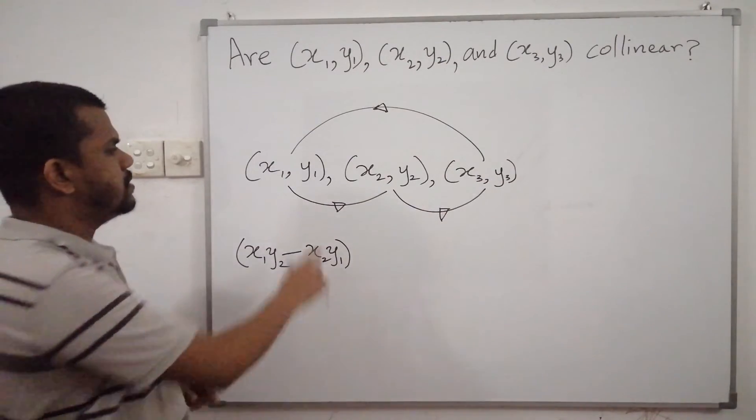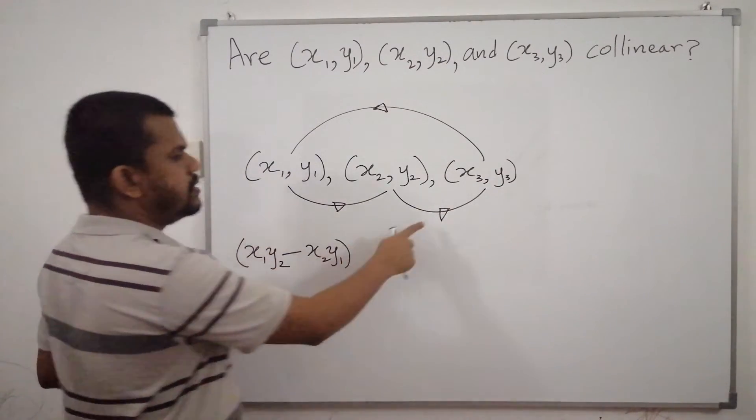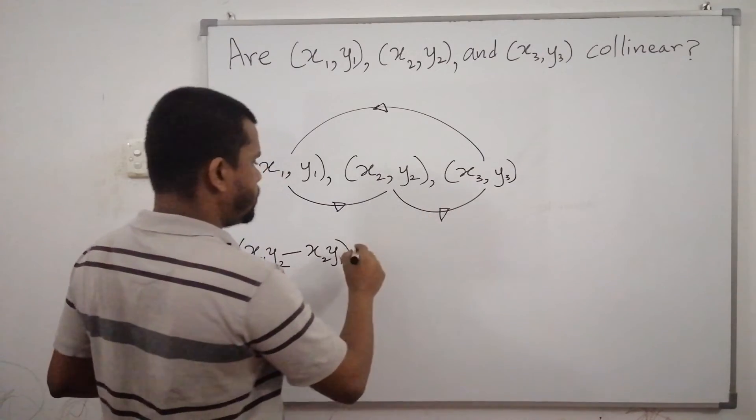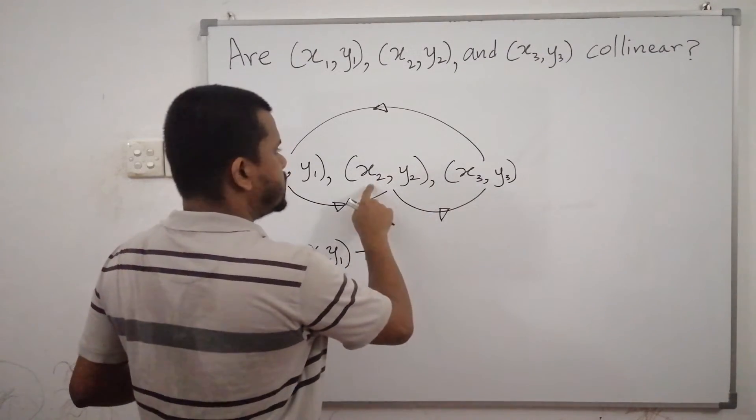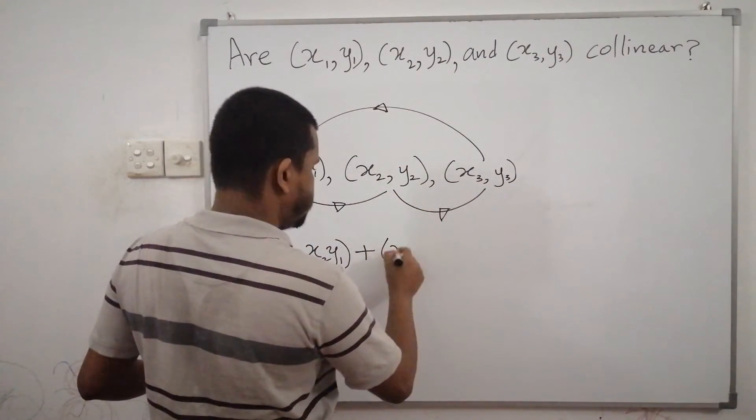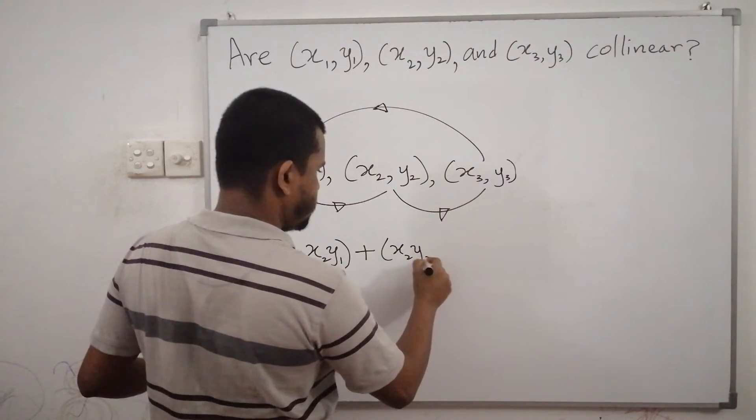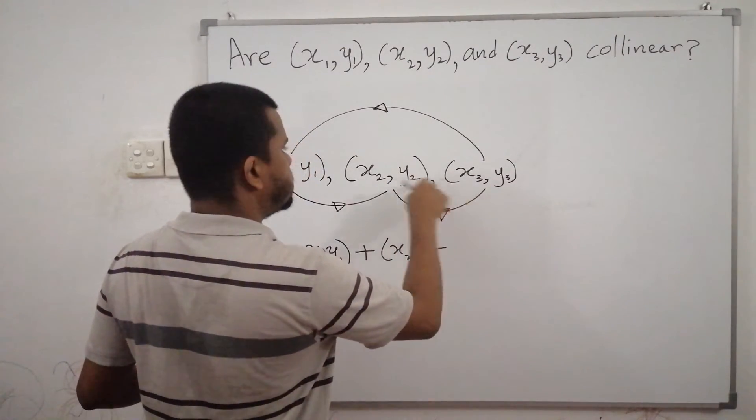Now, consider this arrow, x2 by 3 minus x3 by 2.